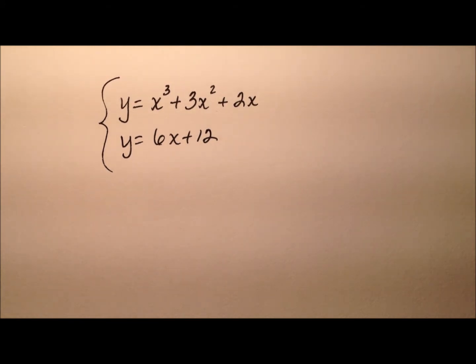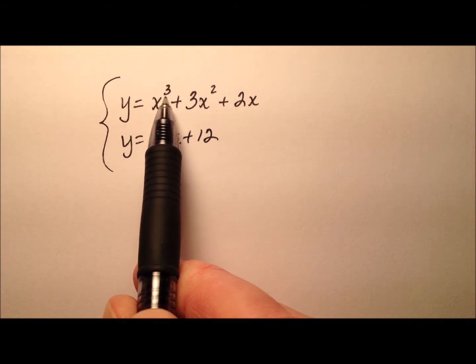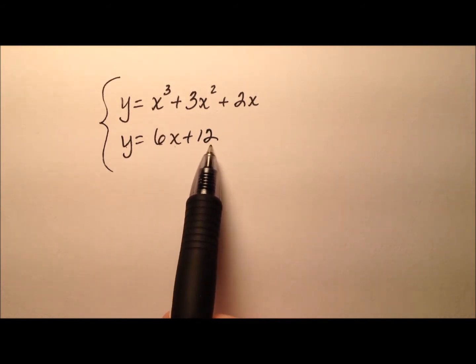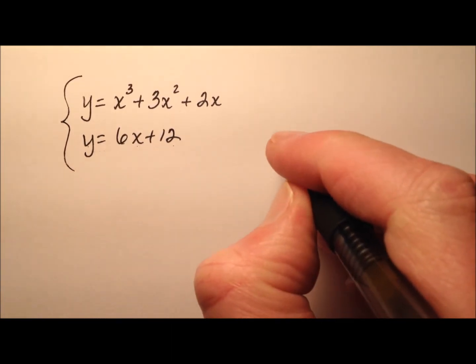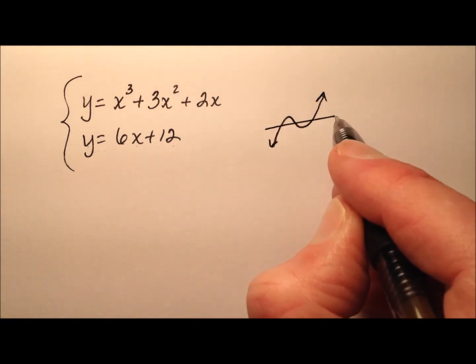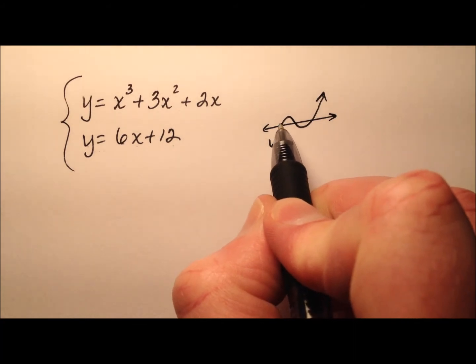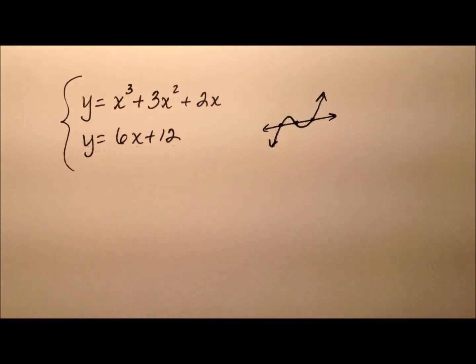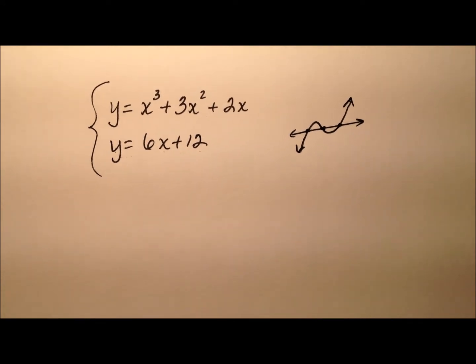So let's go ahead and look at this first example. We have y equals x cubed plus 3x squared plus 2x, and this is going to be a cubic function. And then we have y equals 6x plus 12, and this is going to be a linear function. So this cubic function could look something like this, and we could have a line that crosses. So you could have upwards of three solutions, and those are just all these points of intersections. So there could be zero, one, two, or three solutions in this case. Let's go ahead and solve it and see what happens.